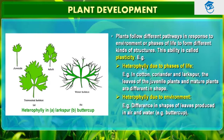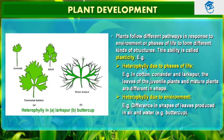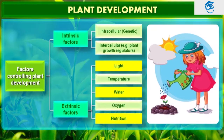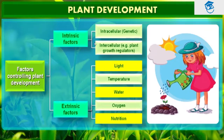Growth, differentiation, and development are very closely related events in the life of a plant. Broadly, development is considered the sum of growth and differentiation. Development in plants — that is both growth and differentiation — is under the control of intrinsic and extrinsic factors. Intrinsic factors are divided into two: intracellular, which we call genetic, and intercellular, which we call plant growth regulators — these are chemicals.